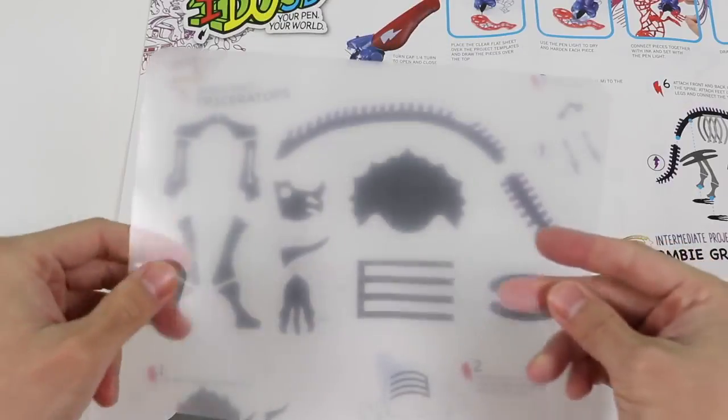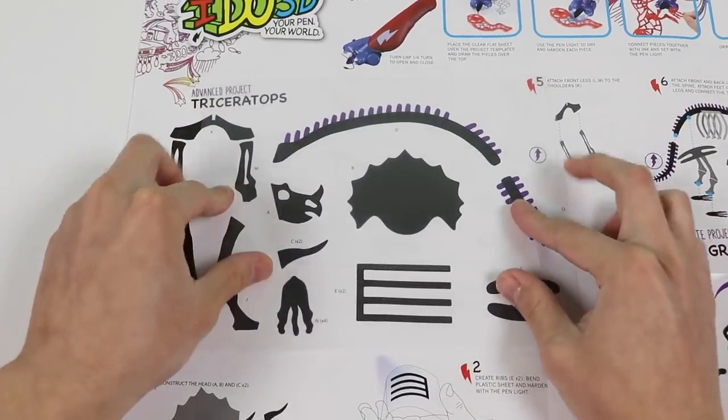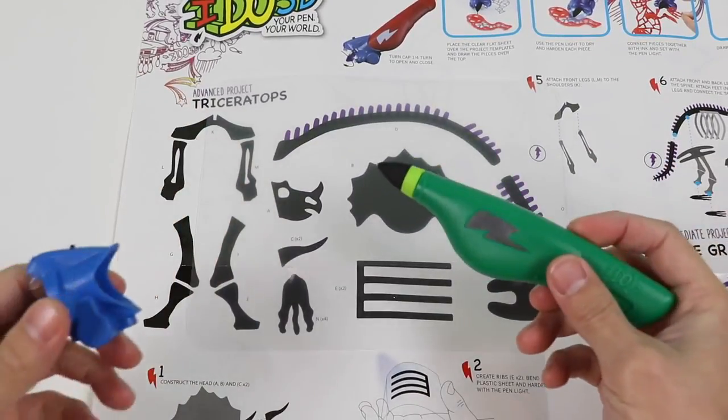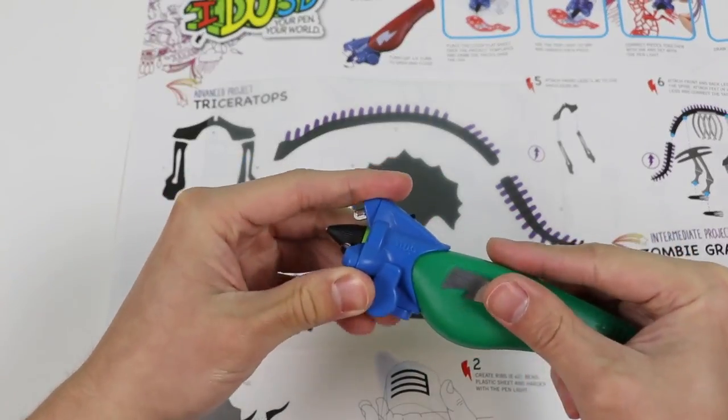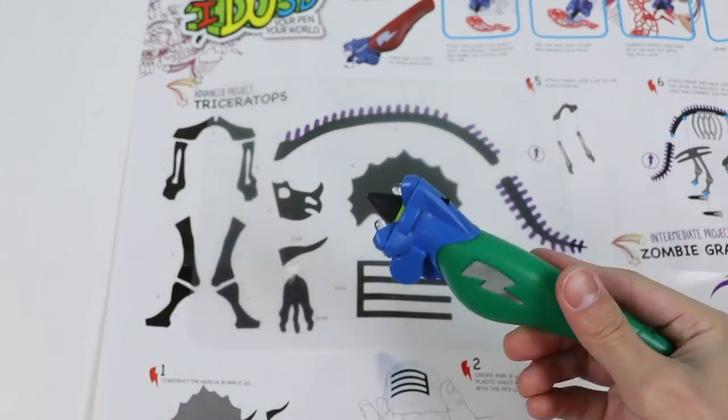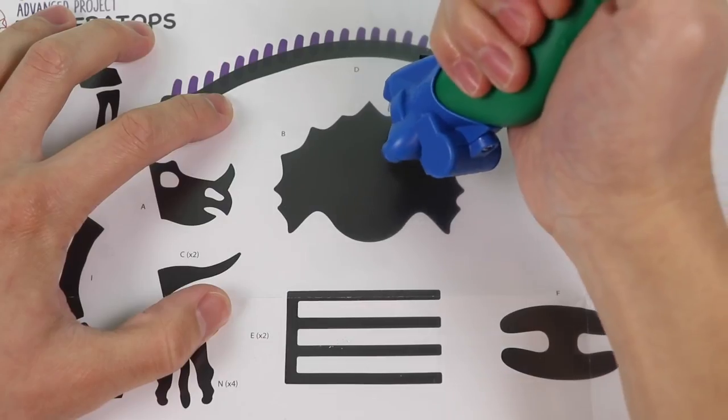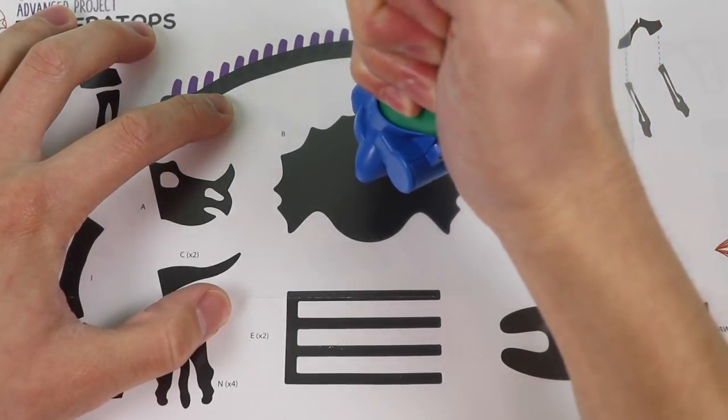Alright, it's time to create! Place the translucent sheet over the Triceratops image. Attach the light onto the front of the pen. And then just squeeze to let the gel out. I'll be making the Triceratops' neck frill green.